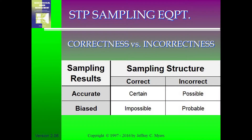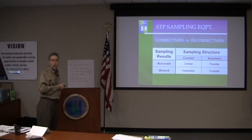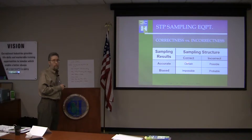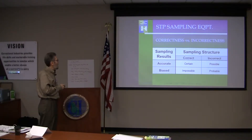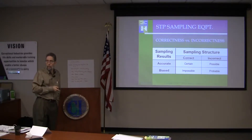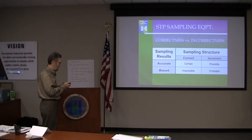Correct sampling versus incorrect sampling has results that relate to the precision, accuracy, and bias concept. If your sampling structure is correct, you will be certain to get accurate results — that's the theory and it will prove out. If your structure is incorrect, it's possible to get accurate results, but sometimes it's just by luck. If your sampling structure is correct, it is impossible to get a significant or substantial bias. Conversely, if your structure is incorrect, you will probably get a bias, but you won't know the sign or the magnitude.